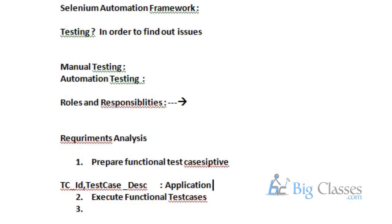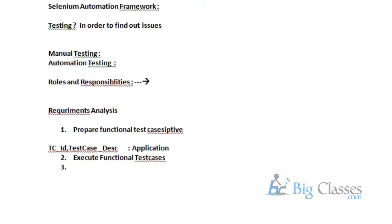Once the bug is fixed, we do retesting. In retesting, if the bug still exists, it is still reproduced. This is what we are doing as manual testing. So I can directly say: what is manual testing? Executing the test cases manually is nothing but manual testing. Executing test cases with the help of manual effort — that is manual testing.